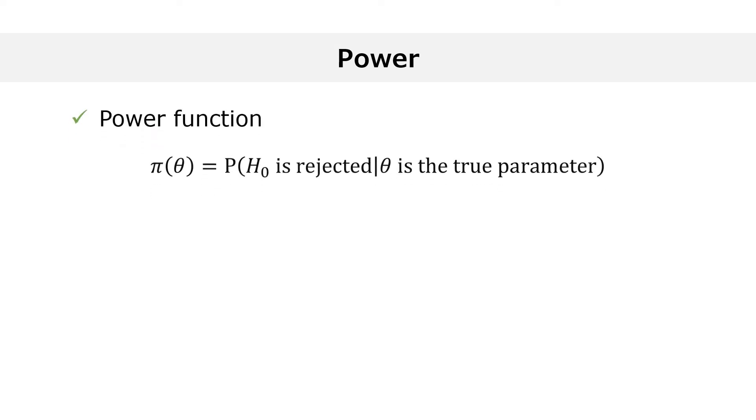Let us start by defining the power function. The power function pi of theta gives the probability of rejecting the null hypothesis when the true value of the parameter is equal to theta.